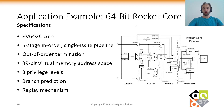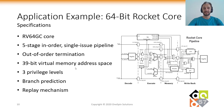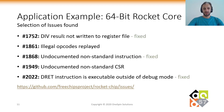The second core the app was applied to was the Rocket core, developed originally at Berkeley and written in Chisel. This configuration is RV64GC — a five-stage in-order single-issue pipeline with out-of-order termination for long-latency instructions such as division or multiplication. It has a 39-bit virtual memory address space, three privilege levels, branch prediction, and a replay mechanism.